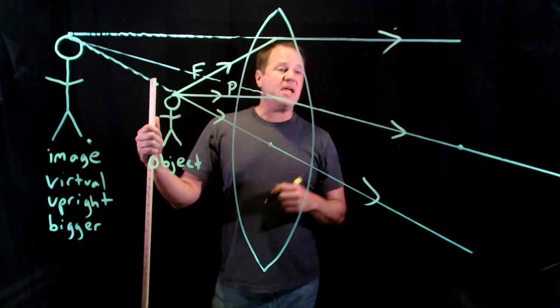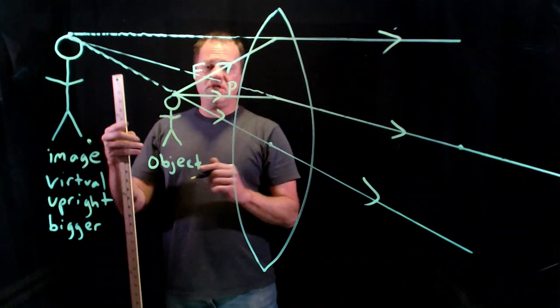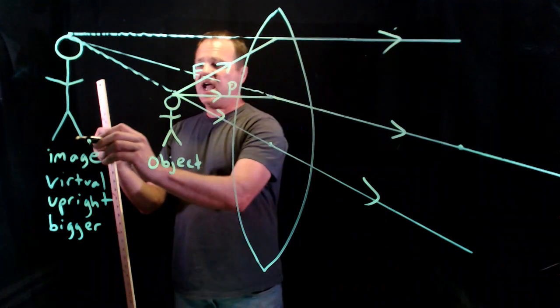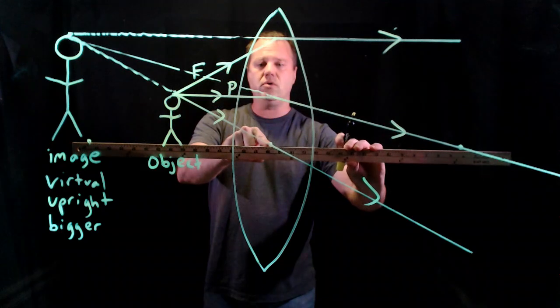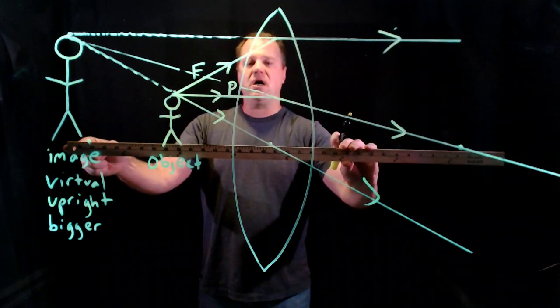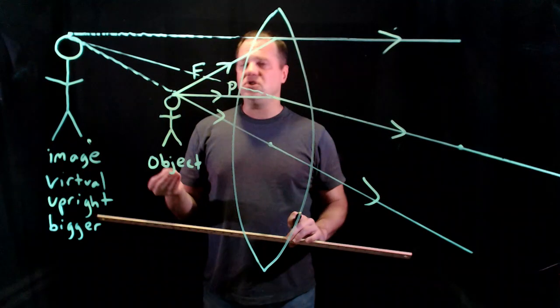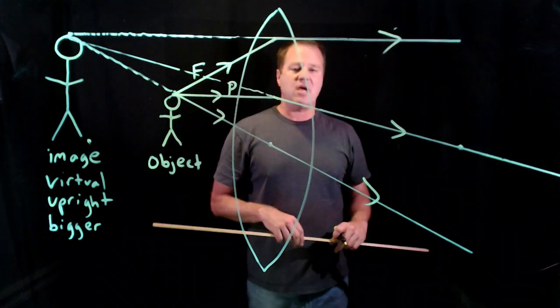By convention, this image distance is going to be negative. So if I measure the distance from the image to the center of the lens, I wouldn't just throw that in as the image distance. It's actually going to be a negative number by convention when you have this type of situation.